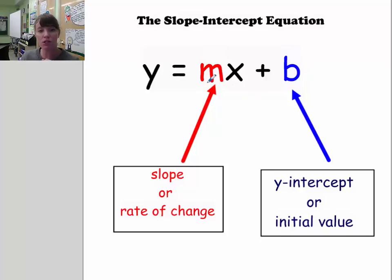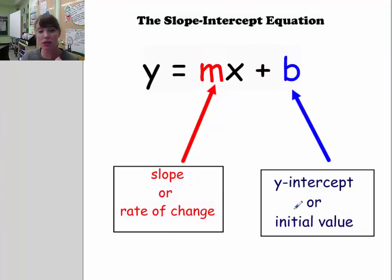When the equation is solved in this form, the coefficient of x is the slope, or the rate of change. And this constant right here is the y-intercept, or the initial value.